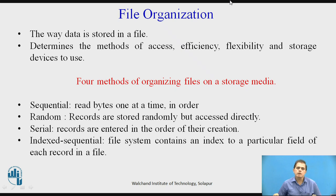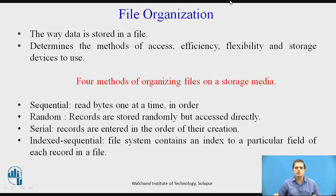Now talking about file organization — what is file organization? It is the way the data is stored in a file. It determines the method of access, efficiency, flexibility, and storage devices to use. There are four methods of organizing files on storage media: sequential, which reads bytes one at a time in order; random, where records are stored randomly but accessed directly; serial, where records are entered in order of their creation; and indexed sequential, where the file system contains an index to a particular field of each record.